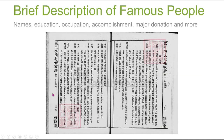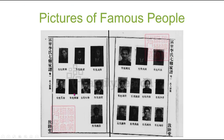This section of the Jiapu records more modern famous people, including their names, education, occupation, accomplishments, major donations, and more. And even better, we have pictures here as well, so you can now put faces to those famous names in your family.